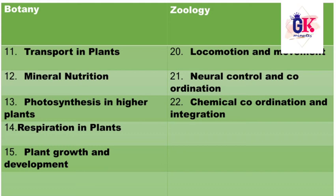In zoology, the 20th chapter is locomotion and movement. The 21st chapter is neural control and coordination. The 22nd chapter is chemical coordination and integration.